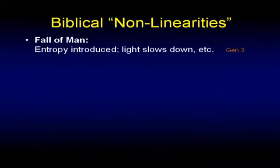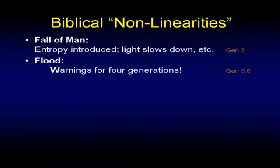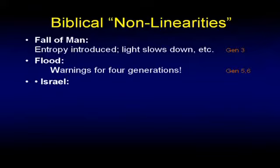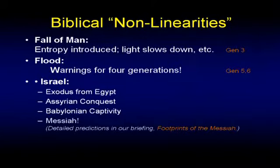Let's talk about biblical nonlinearities. The fall of man — Genesis 3 — is a gigantic nonlinearity. That's where entropy is introduced, where we believe light begins to slow down. Another huge nonlinearity is Noah's flood: what a shock the planet Earth had — the whole planet covered with water, all but eight people. And that was warned about for four generations; it didn't come as a surprise. Another nonlinearity is Israel's Exodus from Egypt — they went down as a family, came out as a nation. The whole ups and downs of the nation, all written in advance: the Diaspora, the Holocaust — all in Scripture, predicted in advance. The Assyrian conquest, the Babylonian captivity, and the Messiah.